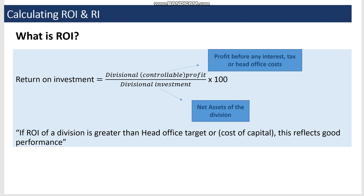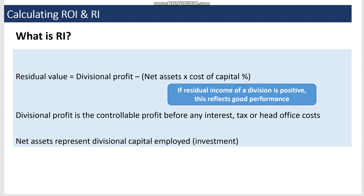Divisional investments are the net assets employed in the division — specifically those under the direct control of the divisional head or manager. If the ROI of a division is greater than the head office target or cost of capital, this reflects good performance; otherwise it represents poor performance.